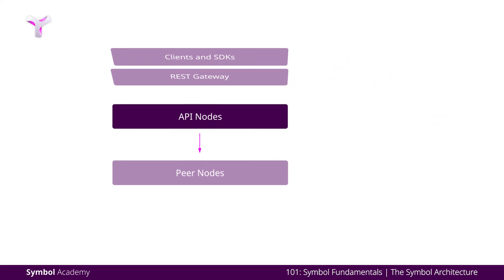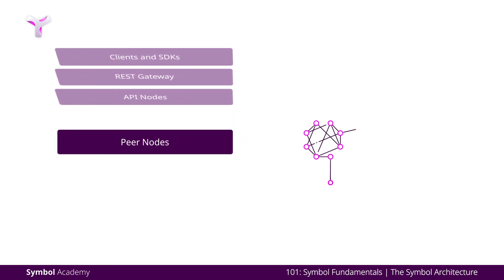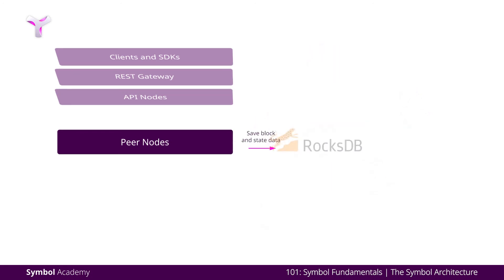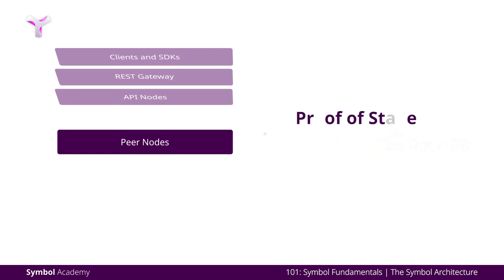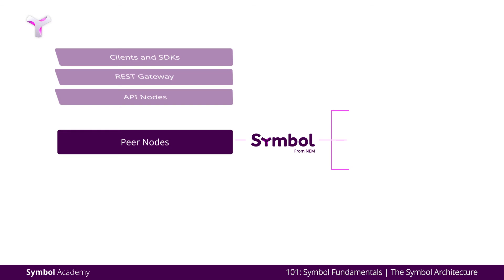The last tier consists of peer nodes, the backbone of a blockchain. Here, transactions pushed by API nodes are propagated to the network for validation. Invalid transactions will be discarded, and valid transactions will be grouped in blocks and linked cryptographically. The changes are then stored as a flat file on disk and the updated chain state in RocksDB. This tier also contains the consensus algorithm that moderates the blockchain servers. Symbol uses an original blockchain protocol called Proof-of-Stake Plus, which we'll cover more in-depth in the next lesson. This tier also gives Symbol the standard benefits of blockchain technology like transparency, security, and traceability.